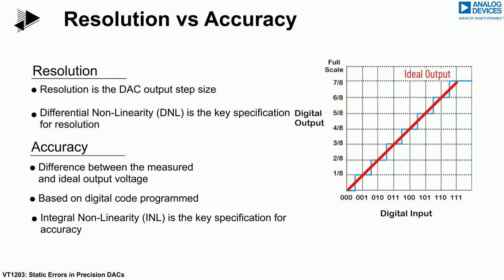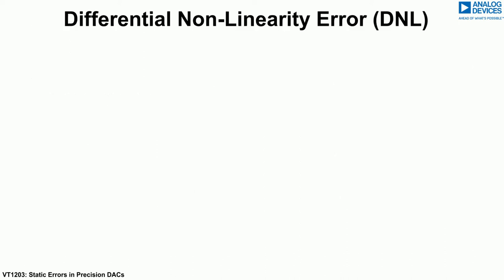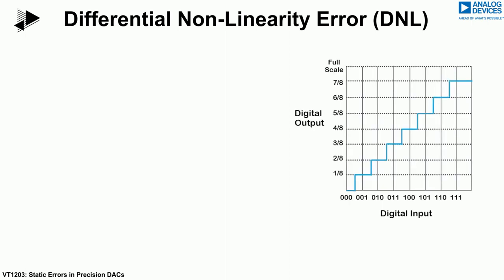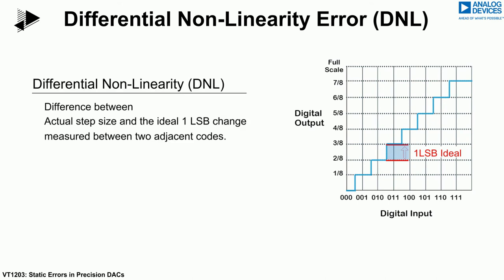We will now take a look at two key specifications — DNL and INL — in more detail. Starting with the DNL specification: the ideal step size for each DAC code is 1 LSB. The DNL error is defined as the difference between the ideal LSB step and the actual, or real, step as one moves along the DAC transfer function.